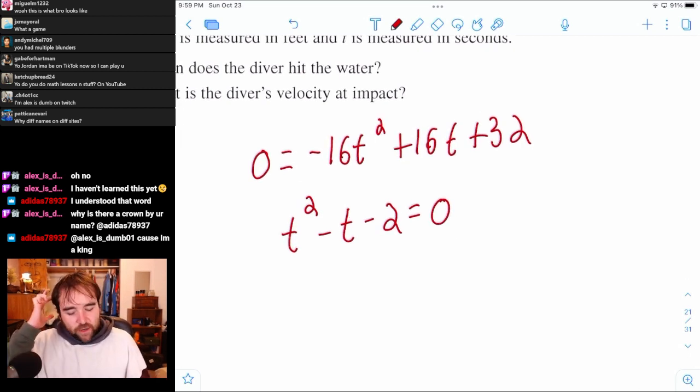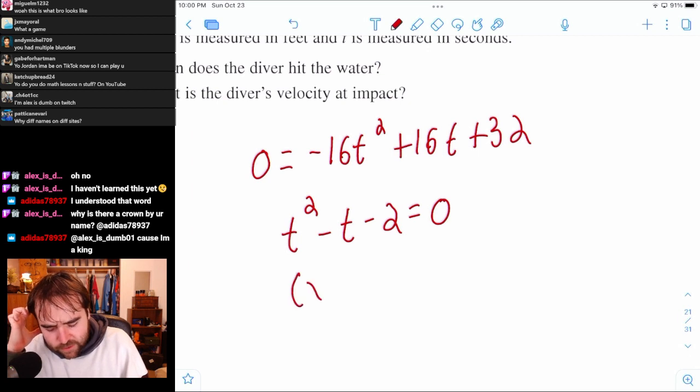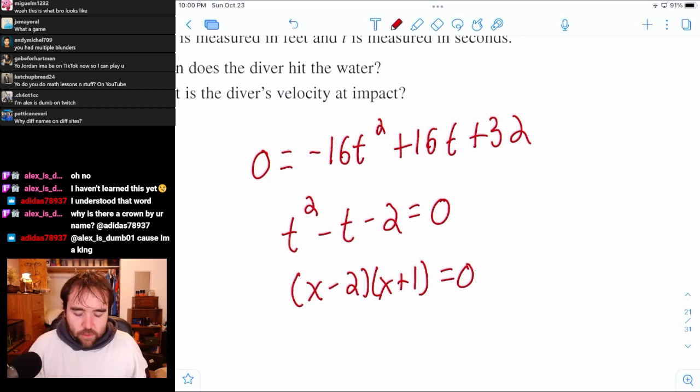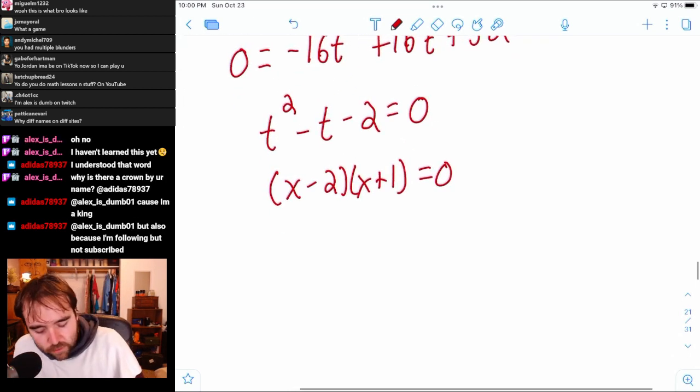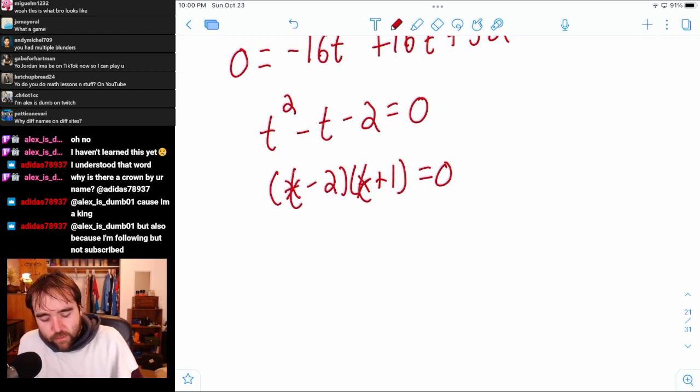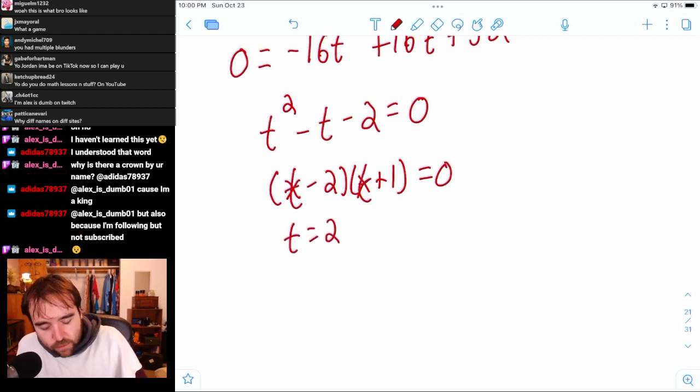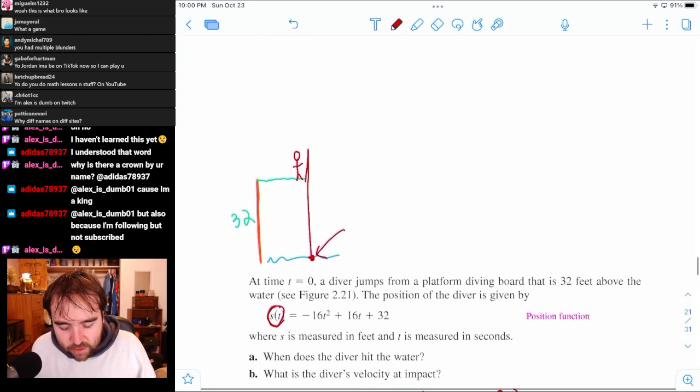And then now, quick factor, quick factor. It's only two numbers that multiply by 2, so you should be fast with that. X minus 2, X plus 1 equals zero. And then, so where does he hit the ground? We keep solving for X. I guess for T is what it really should be. We get T equals 2, and T equals negative 1. And so what does that tell us?